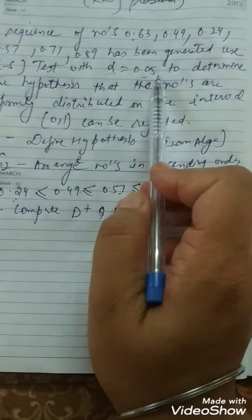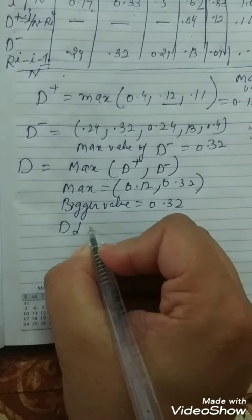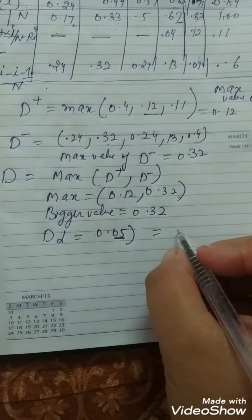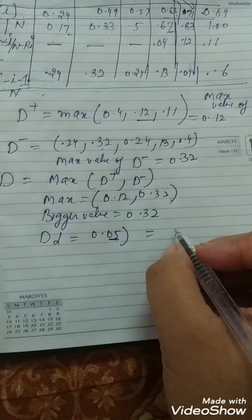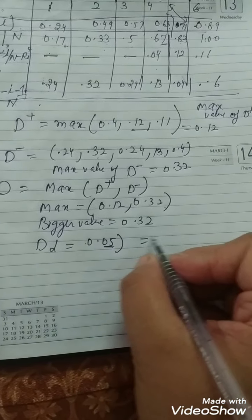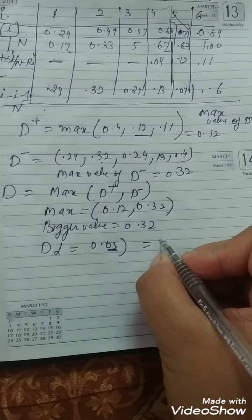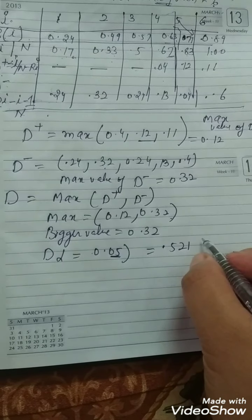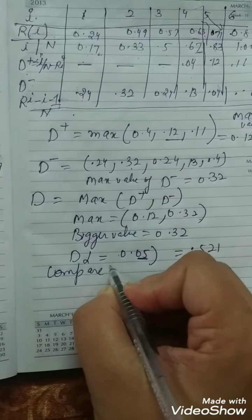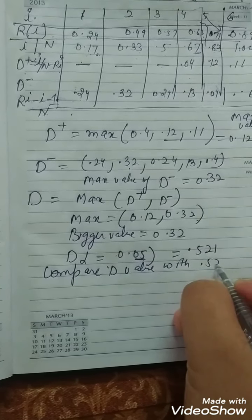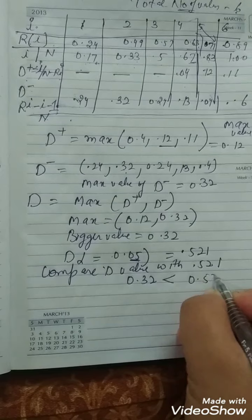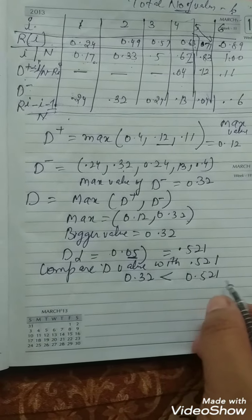The alpha value given is 0.05. The table value D-alpha for alpha equal to 0.05 and n equal to 6 is 0.521. This table value would be provided in an examination. Now compare D equal to 0.32 with the table value 0.521. Since 0.32 is less than 0.521, this value lies within the statistical table region.